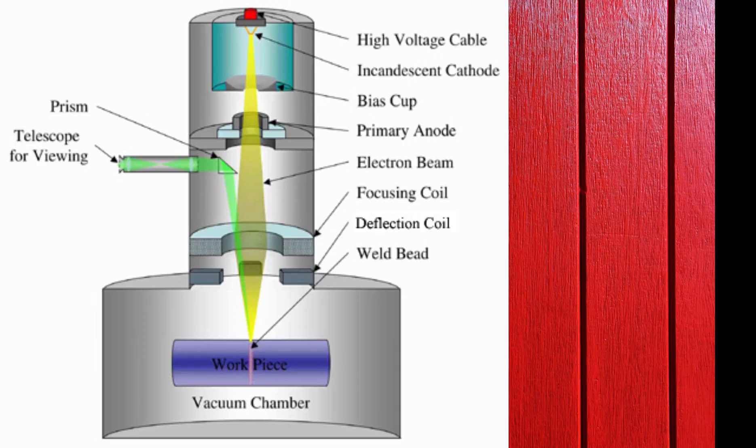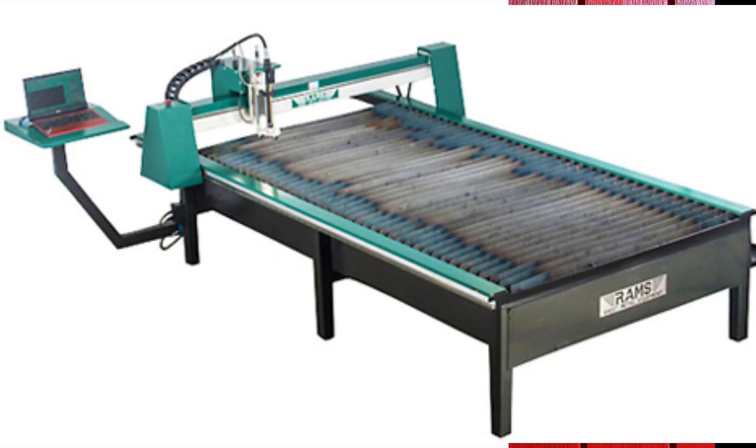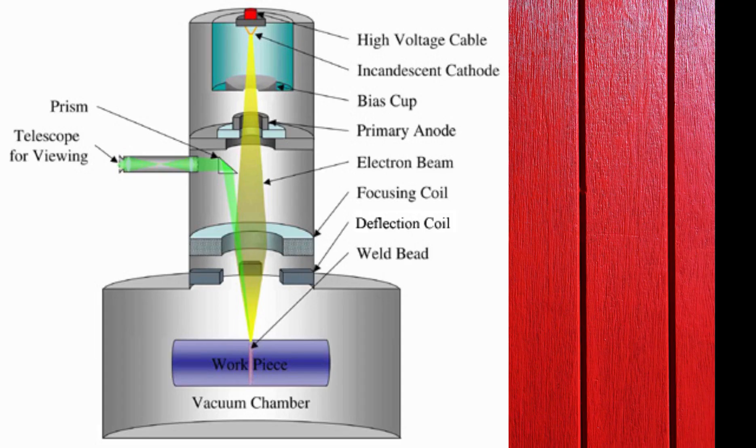This process uses a CNC table to hold the workpiece, which can move in all three directions. The welding plates are clamped on the CNC table with the use of suitable fixtures.